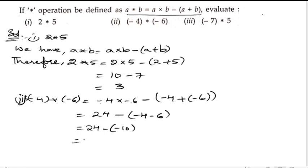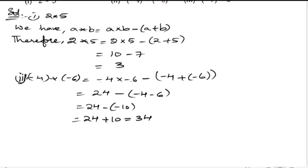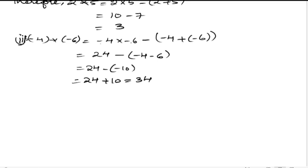24 minus (minus 10), we will get 34. Next, last bit. So let us do the last bit, that is minus 7 star 5.